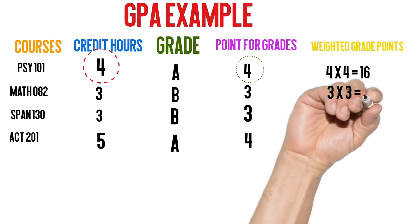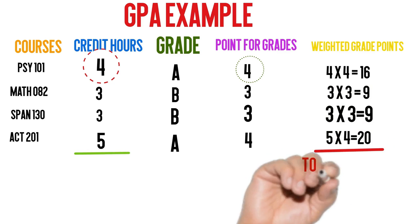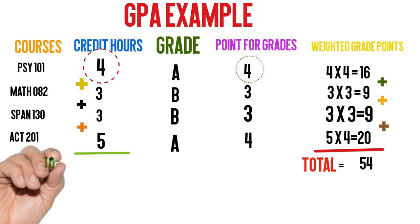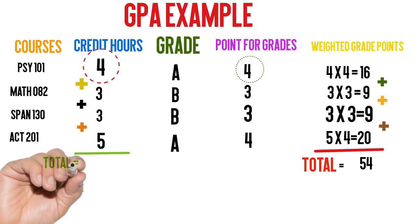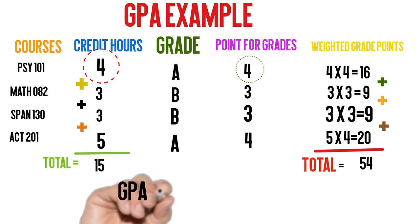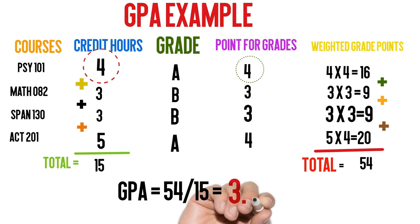Similarly, we calculated the weighted average grade for the rest of the courses. Now we add these weighted average grades: 16, 9, 9, and 20. We get a total of 54 weighted average grades. Now we add the course credit hours: 4, 3, 3, and 5 — we get 15 total course credit hours. Finally, we divide the total weighted average grades of 54 by the 15 total course credit hours. We get a GPA of 3.6. Now you can easily calculate the GPA of any semester.